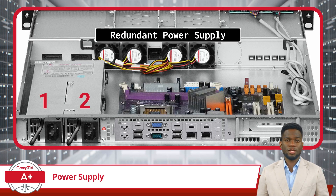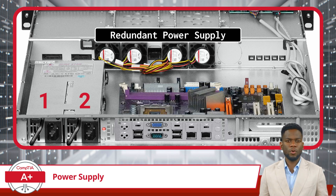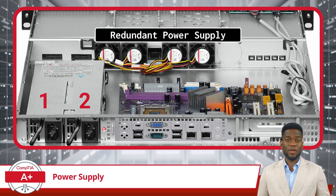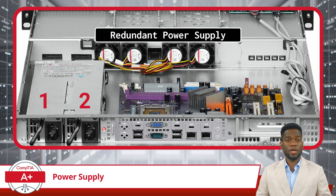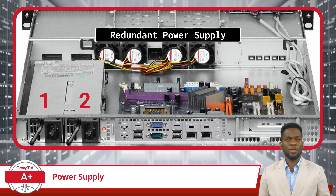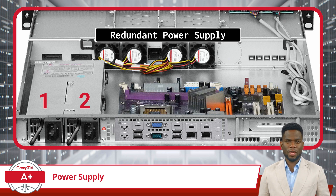Redundant power supplies are another power consideration when uninterrupted operation is paramount. Unlike traditional power supplies, which rely solely on a single unit, redundant power supplies offer a fail-safe mechanism by providing backup power in the event of a primary PSU failure. This redundancy ensures that even if one power supply unit malfunctions, the system can seamlessly switch to the backup unit without interruption, so critical operations can continue without disruption, minimizing downtime and potential data loss. Redundant power supplies are engineered to meet stringent reliability standards, offering peace of mind to organizations that rely on continuous operation for their business activities.